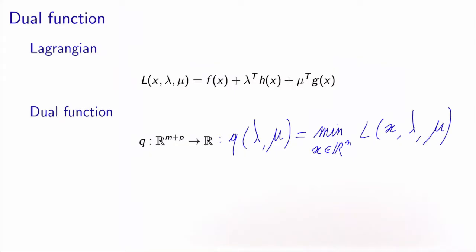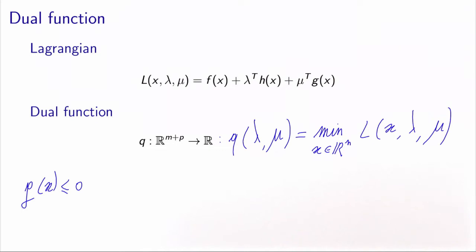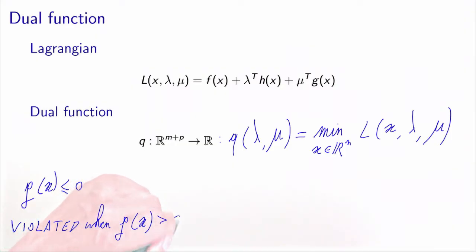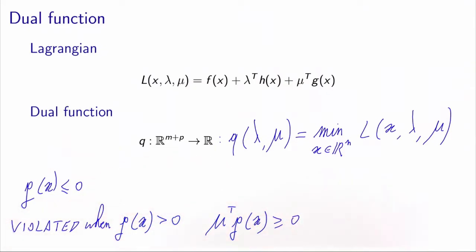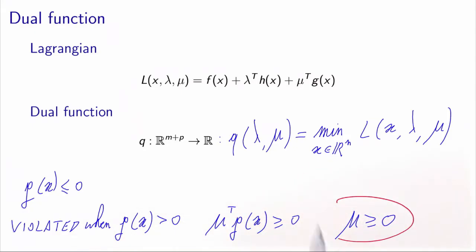We need to treat the equality constraints and the inequality constraints differently. The inequality constraints write g(x) ≤ 0. It means that we want to pay a penalty only when the constraint is violated. We would like the penalty, meaning mu transpose g(x), to be positive. To ensure this, the condition is that mu must be greater or equal to zero. Because the constraints are violated as soon as g is positive, mu must also be positive to generate a positive penalty.